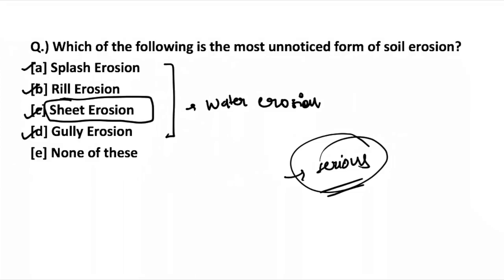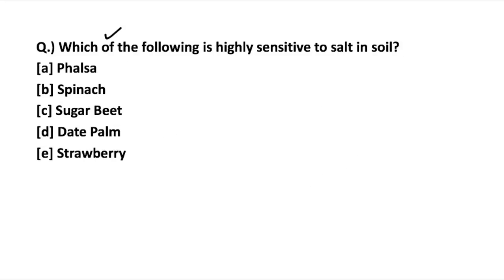So to come back to the question — sheet erosion is the most unnoticed form of soil erosion, and it can cause harm in the long run. As it is not noticed during short durations, it becomes the most serious form of soil erosion. It's very important to study the different forms of soil erosion.